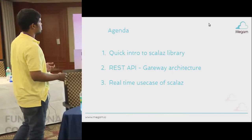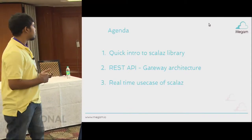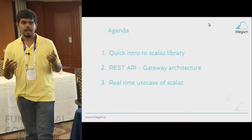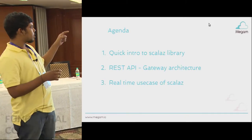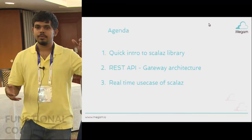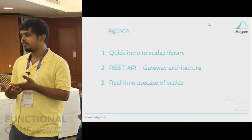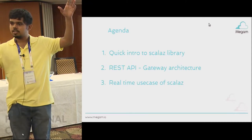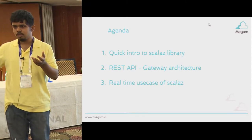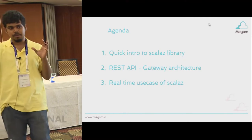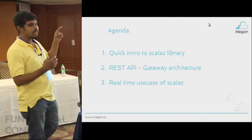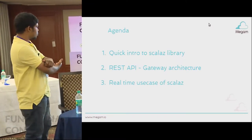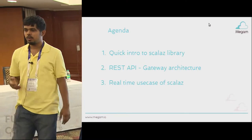The agenda is pretty simple. We will look into the ScalaZ library — a quick intro on what it is and how to use it — and then the REST API gateway, the architecture of the API server. This API server, since we are a cloud platform, does the full heavy lifting. It's a loosely coupled architecture. The API connects to a message broker and a PaaS engine. That is written with Scala Play and we've used the ScalaZ library. I'll also show you some real-time use cases of ScalaZ — basically the code of how we wrote it.